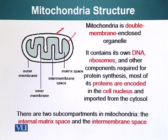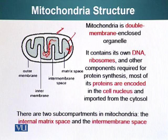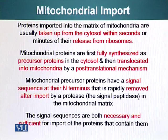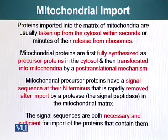There are two sub-compartments in the mitochondria: the internal matrix space and the intermembrane space — the space between the two membranes. Proteins imported into the matrix are usually taken up from the cytosol within seconds or minutes of their release from the ribosome. Mitochondrial proteins are first fully synthesized as precursor proteins in the cytosol and then translocated into mitochondria by a post-translational mechanism, which contrasts with the ER transport mechanism we will discuss later.